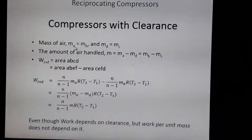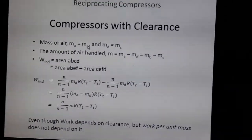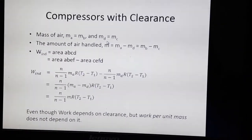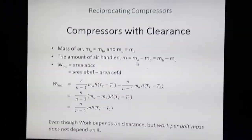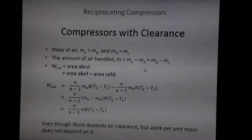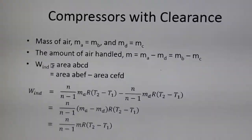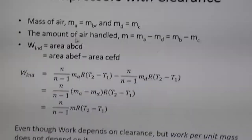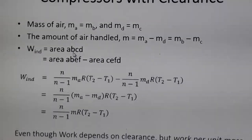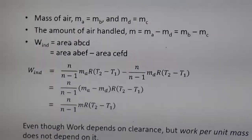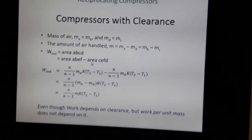The total mass remains constant, so mass at state a equals mass at state b, and similarly mass at state d equals mass at state c. The net mass delivered is the difference between m_a and m_d, or equivalently the difference between m_b and m_c. The indicated work required for the compressor with clearance is given by area a-b-c-d, which can be written as the difference between area a-b-e-f and area c-e-f-d.